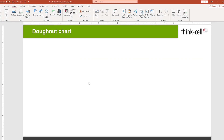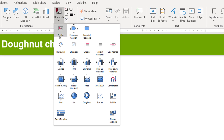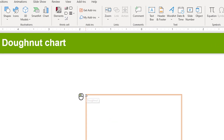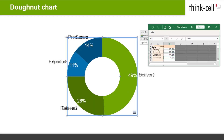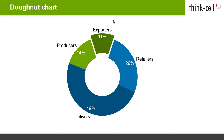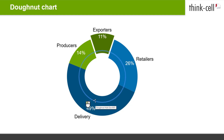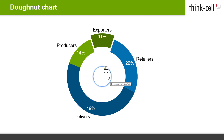To insert a donut chart from scratch, go to the PowerPoint ribbon, open the Elements menu, select Donut, and click onto the slide once. Entering your data, rotating the chart, ordering, and exploding slices works just as it does with the pie chart. If needed, adjust the size of the donut hole by selecting any slice and dragging the inner handle. Of course, you can also turn your donut into a pie chart by dragging the handle to the very center.